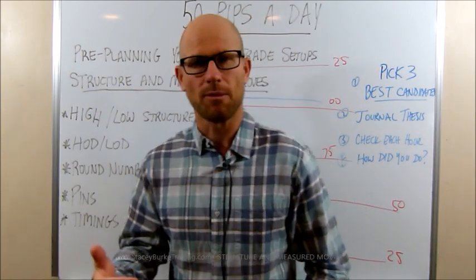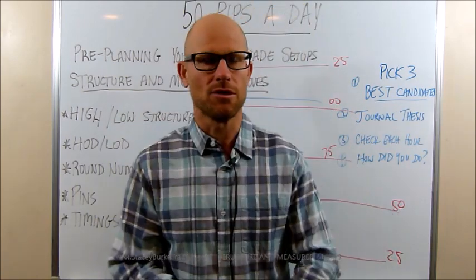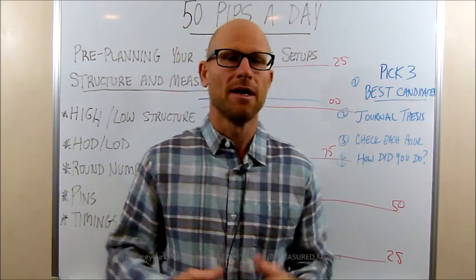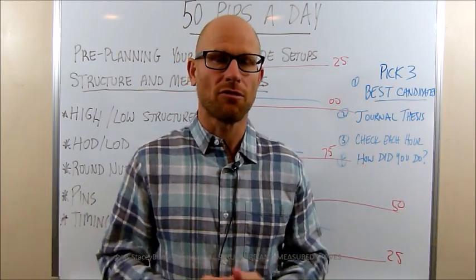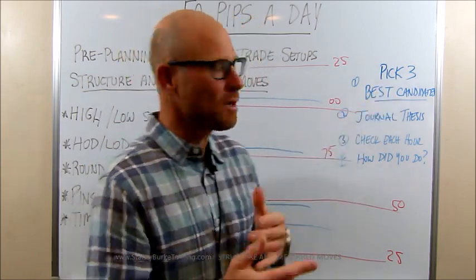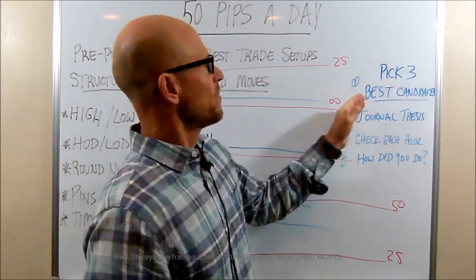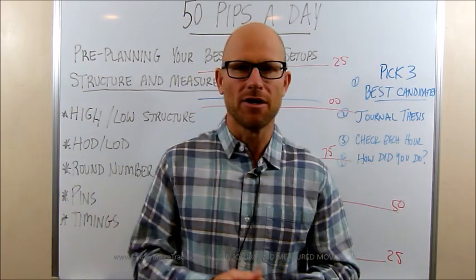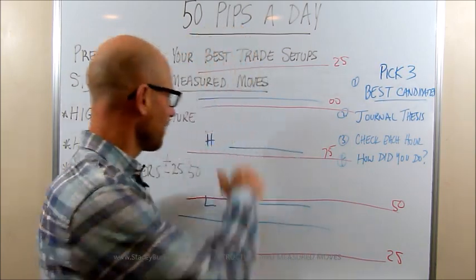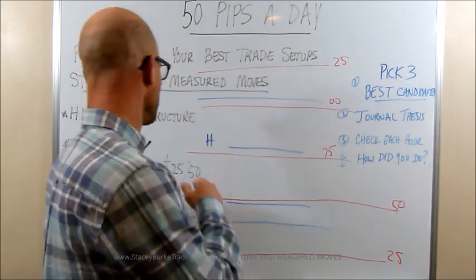Coming back to a simple approach to the market each and every day — one of the things I talk about is narrowing the 6 pairs down to 2 or 3, playing a little game with myself, narrowing to the 3 best candidates for trade setups just prior to that 12-candle window. I'm looking for pairs that have established a clear and easy-to-see intraday high and low between the 25-pip boxes, maybe 50-pip boxes, between the round numbers.